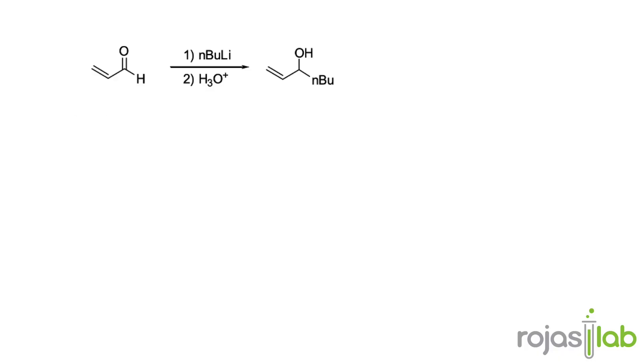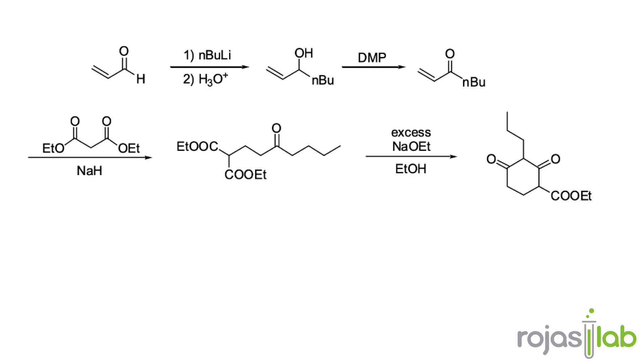So remember, the first step is the addition of the butyl-lithium group to do a 1,2-Michael addition, followed by re-oxidizing the alcohol to a ketone, followed by a 1,4-Michael addition with a diester species, subsequent Dieckmann cyclization to form the six-membered ring, and then removing the ester group using this workup condition.